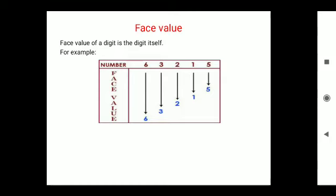If we talk about sixty thousand, the face value is six. If we talk about thirty thousand, the face value is three. If we talk about two thousand two hundred, the face value is two. If we talk about ten, the face value is one.